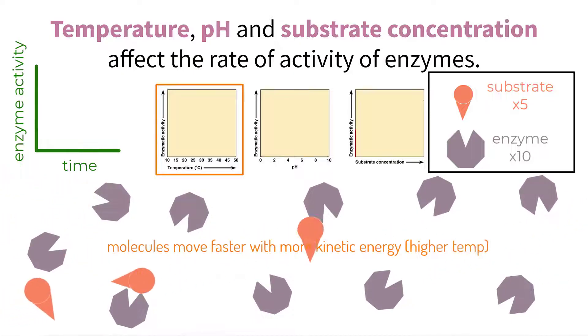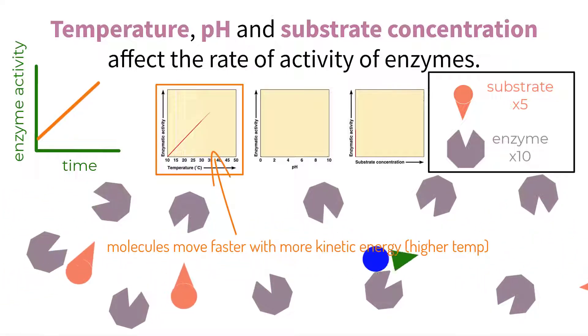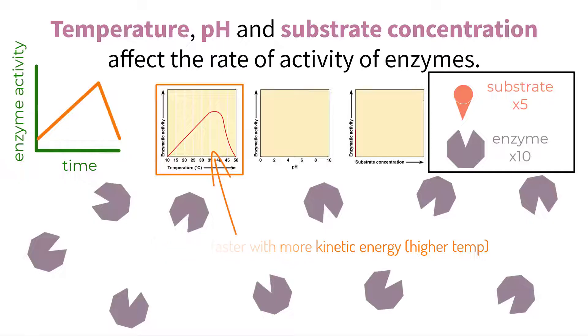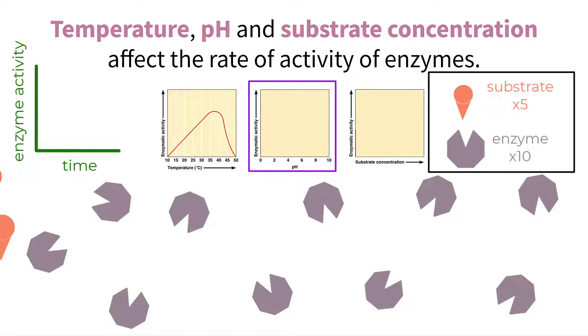Now if the temperature of the system were to change, let's say it increases, the molecules within the system will start to move faster. This will increase the speed of the substrates and the enzymes and allow more of an opportunity for them to interact, ultimately increasing the enzyme activity. But this will only increase to an extent because we know that if the temperature gets too hot, the enzyme can start to denature, rendering them useless, resulting in a decrease in enzyme activity. Additionally, we can assume that if the temperature decreases, the molecules will have less kinetic energy and move slower, causing a decrease in enzyme activity.